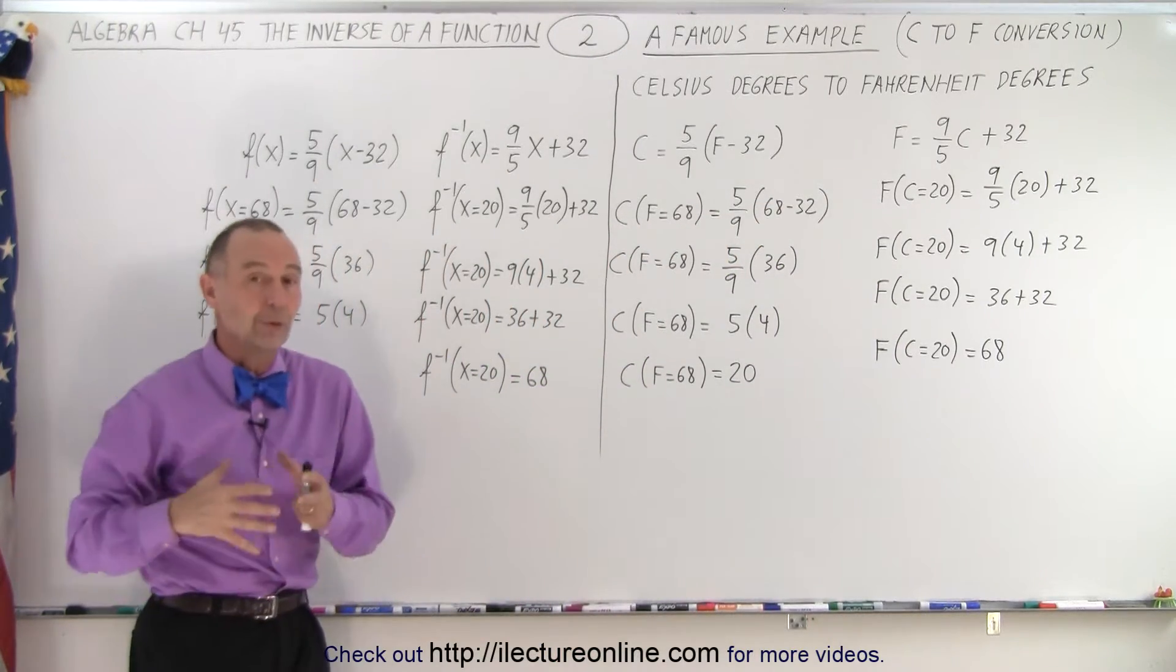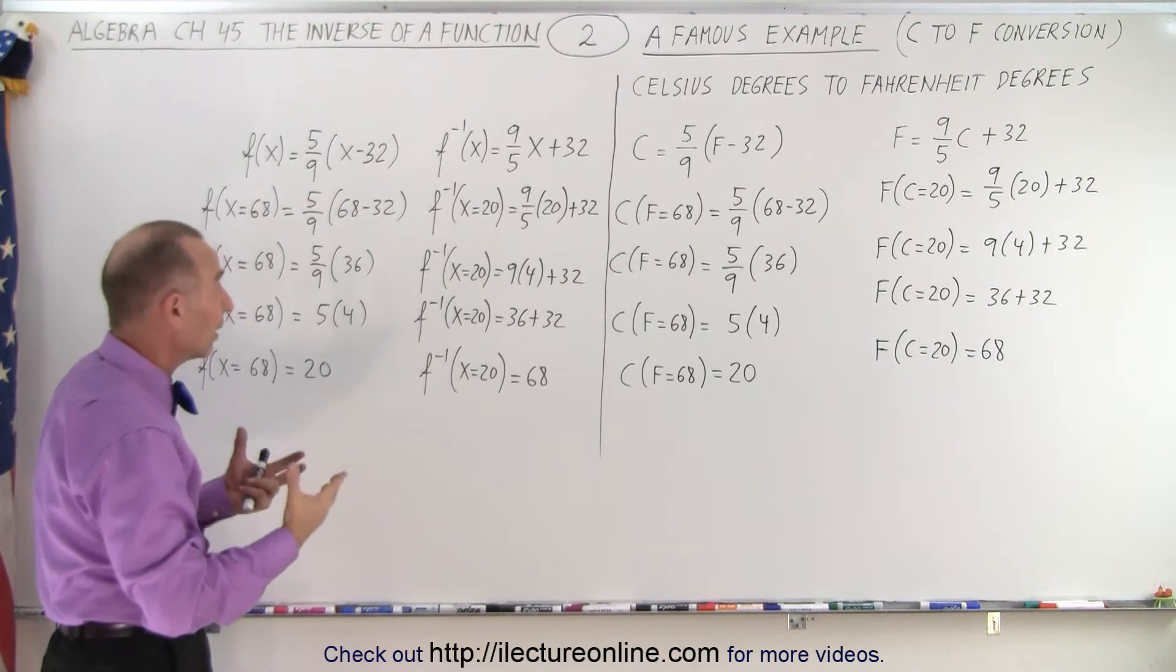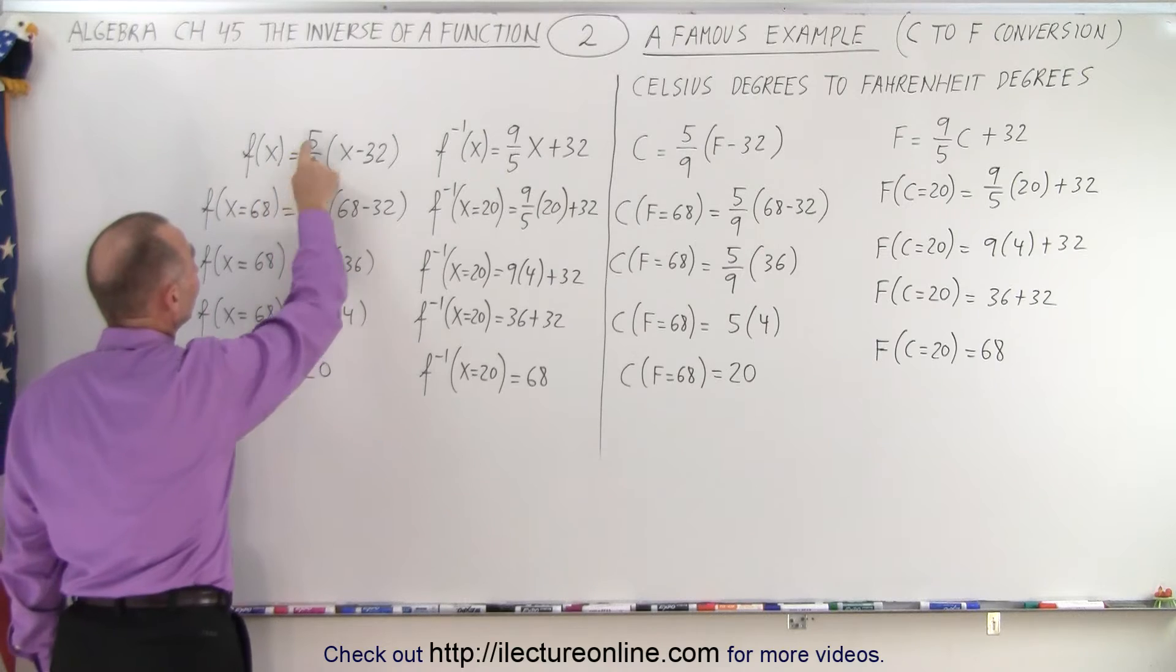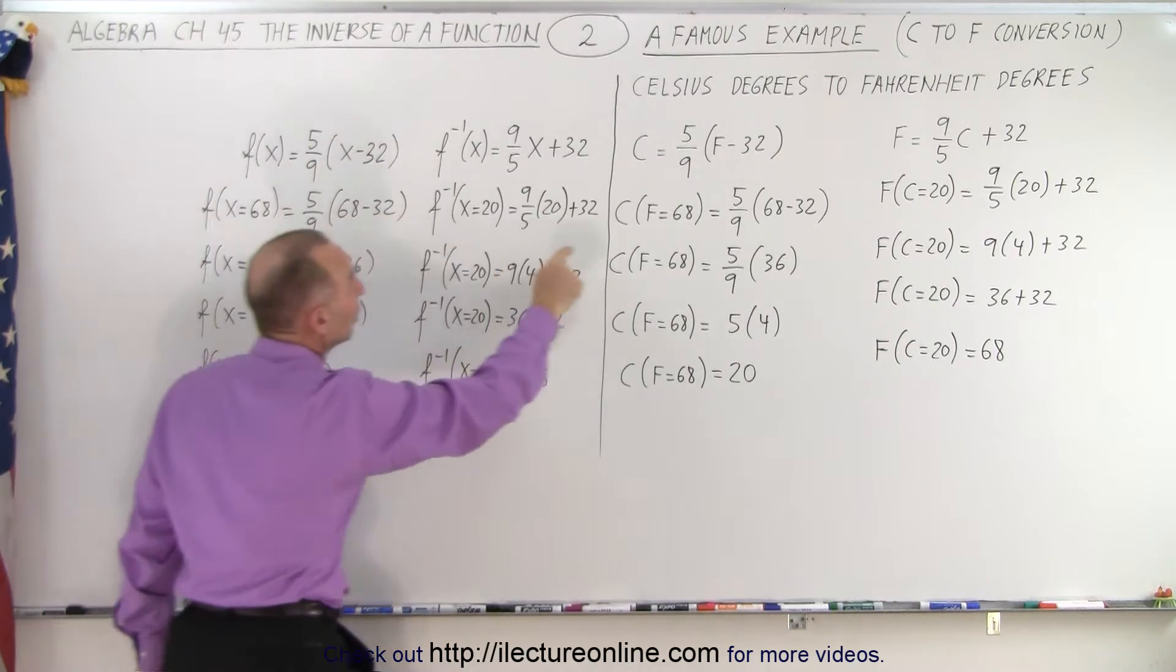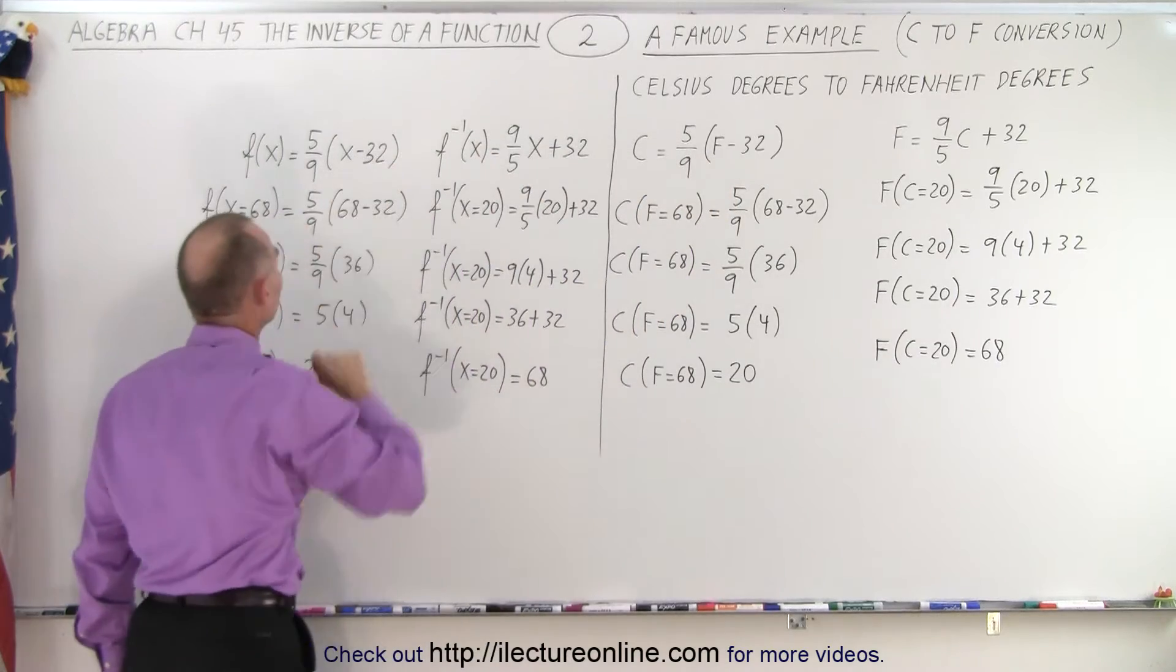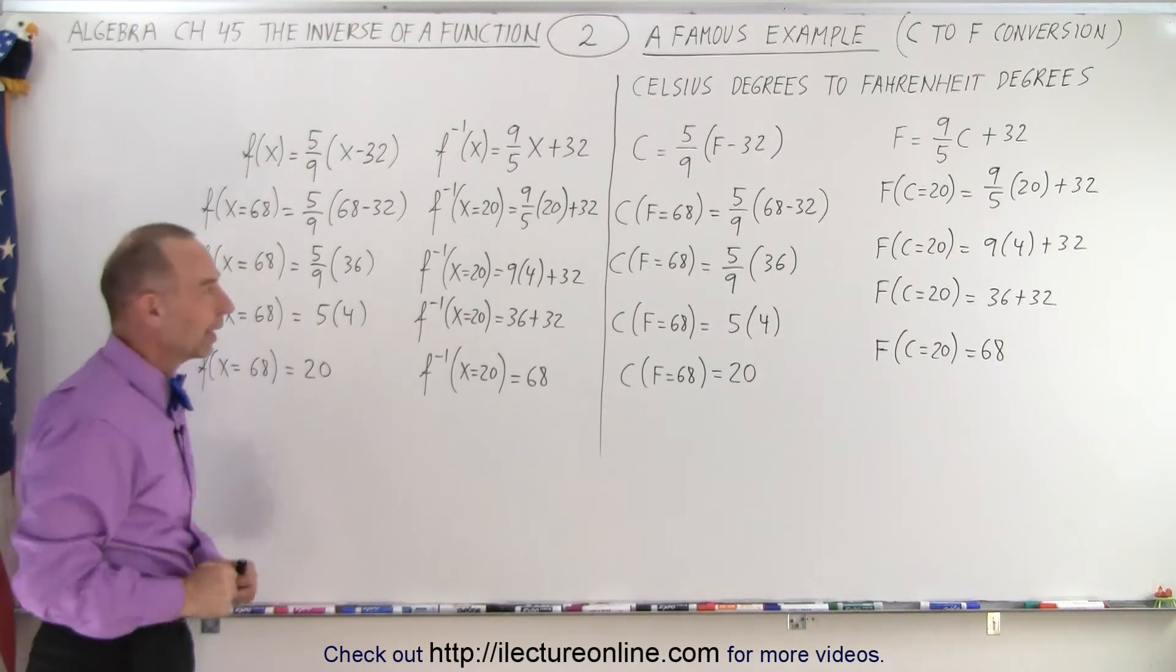Now technically if we're going to write this in an algebraic equation, we use f of x and x. Here's the initial function: f(x) is 5/9(x minus 32). So you can see it's the same equation but instead of f we use x, just a variable, the variable x.